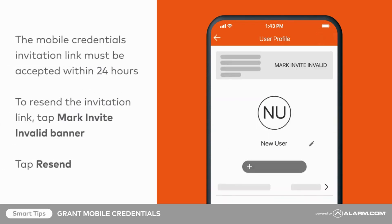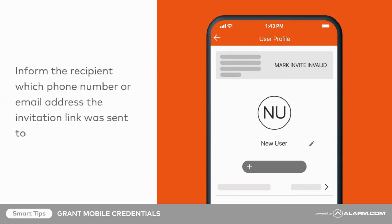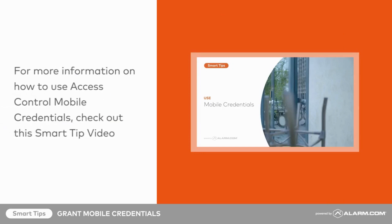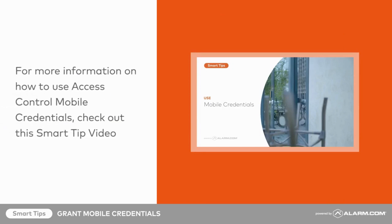The recipient will have 24 hours to accept their mobile credential invitation link. If the invitation link is not accepted within 24 hours and you need to resend it, tap the Mark Invite Invalid banner at the top of their user profile, then tap Resend. Be sure to inform the recipient which phone number or email address the invitation link was sent to, then instruct the recipient to follow the directions they receive by text or email, or check out the Smart Tip video in this series for more information.